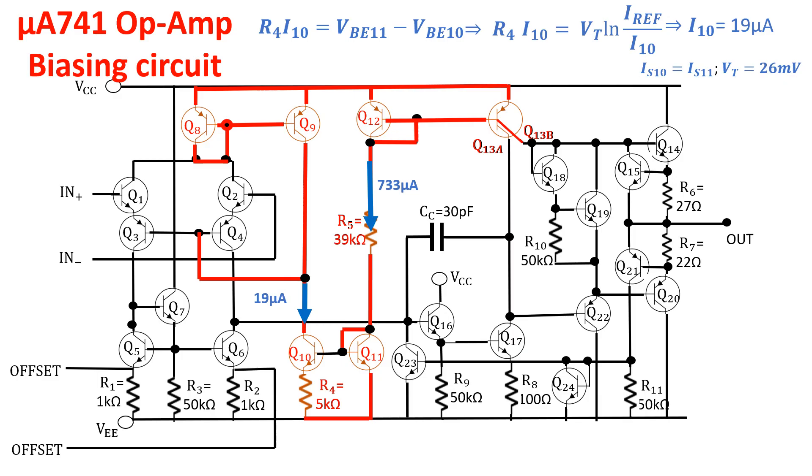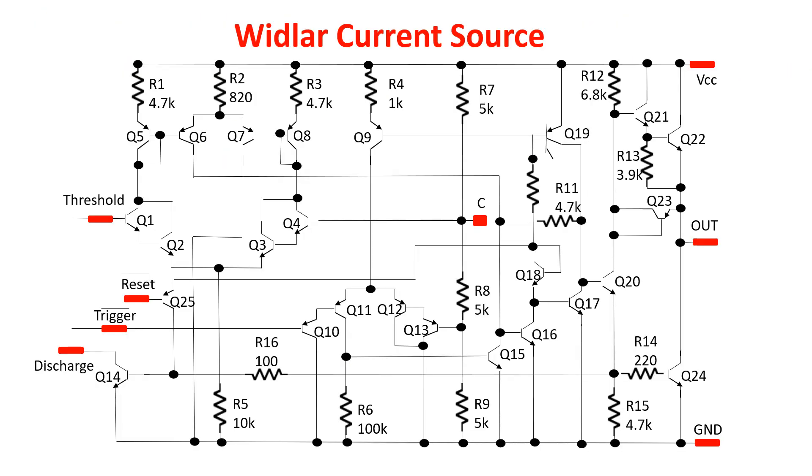In the 555 integrated circuit, we find another example of a Widlar current mirror. Here, the couple Q19 and Q9 is used to scale down the current for biasing the trigger comparator composed by the PNP Darlingtons Q10 to Q13. We want a low current to bias the trigger comparator because we want a small base current or a small current in the trigger input.